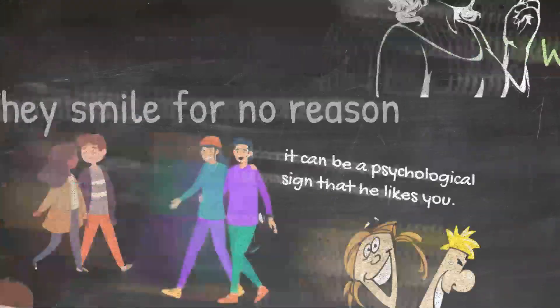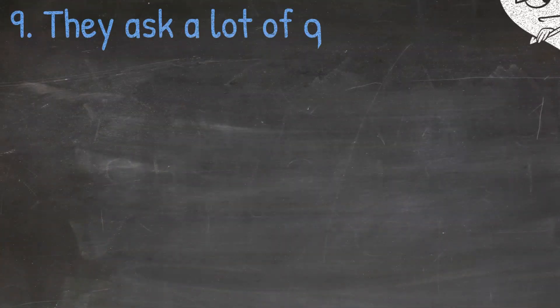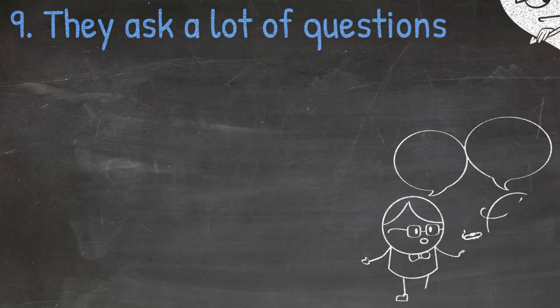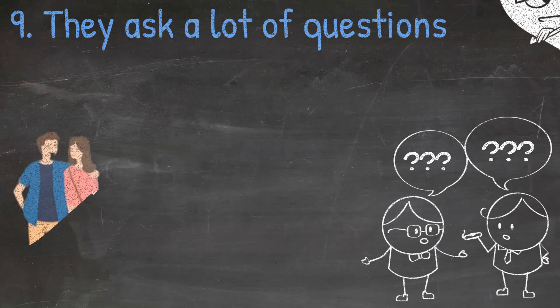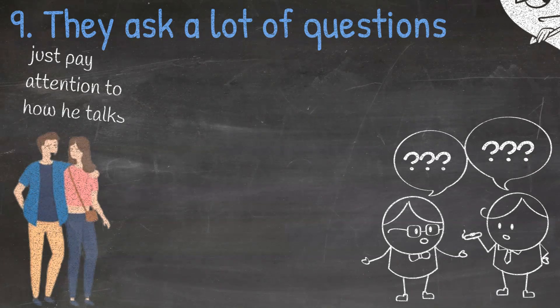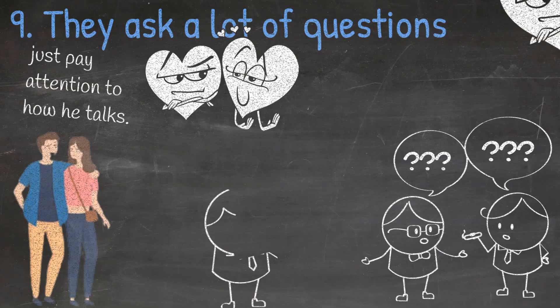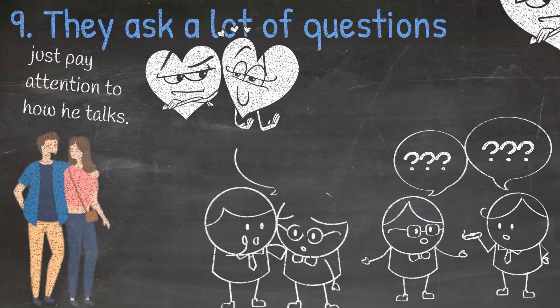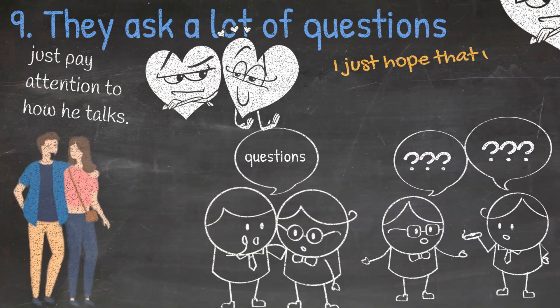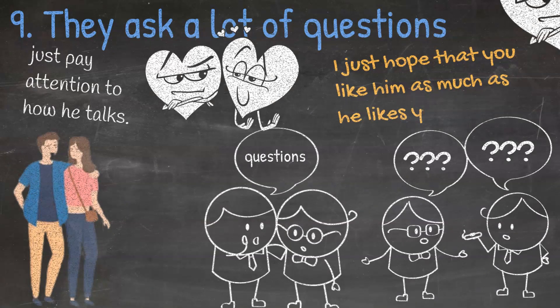Nine: They ask a lot of questions. If someone you just met asks a lot of questions, it means that they want to get to know you better and they want to share some things with you. If you are on a first date and you are not quite sure whether a guy likes you or not, just pay attention to how he talks. If he is keeping quiet all the time, it means that he is not interested in you. But if he asks a lot of questions, it is a subtle sign that he likes you more than you could imagine. I just hope that you like him as much as he likes you.